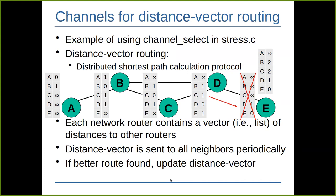This distance vector routing protocol is already implemented and uses your channel implementation. It's one of the benchmark tests for channels, which is how you get your score — it runs your channels under different conditions. This is just an example of how channels can be useful; you don't necessarily need to know the details.